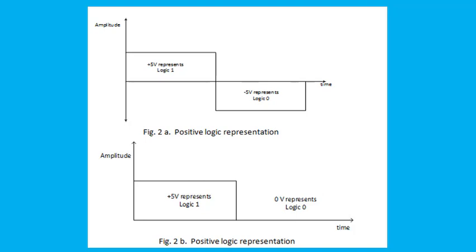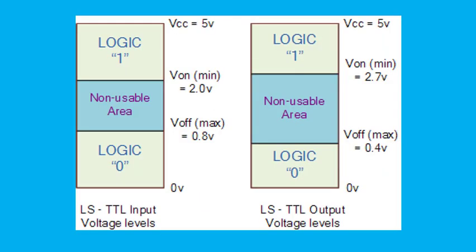In reality, because of circuit variations, 0 and 1 are represented by voltage ranges instead of particular voltage levels. Usually, any voltage between 0V and 0.8V represents logic 0, and any voltage between 2V and 5V represents logic 1.